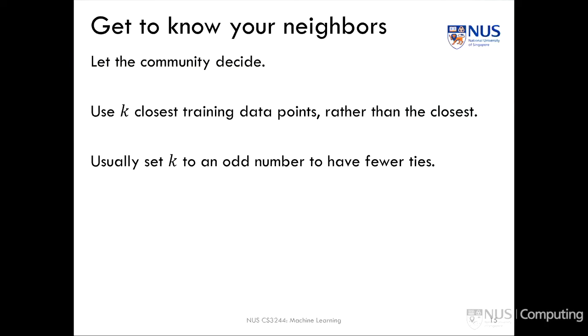Let's extend nearest neighbors to k nearest neighbors, which is a really easy and simple extension. The point here is that instead of looking at your nearest neighbor, you get a community to decide. We're going to use the k closest training data points, rather than just the closest one, to make a vote and decide what is the class of that particular point.